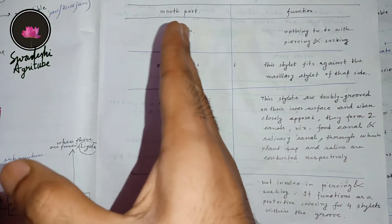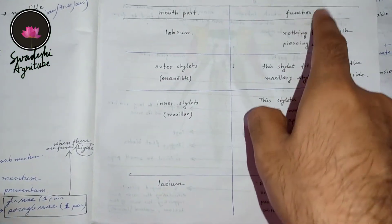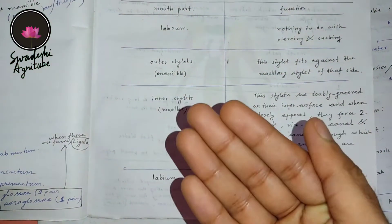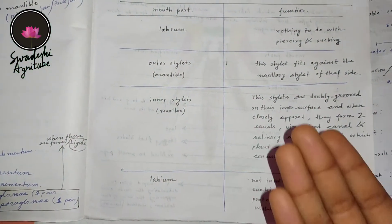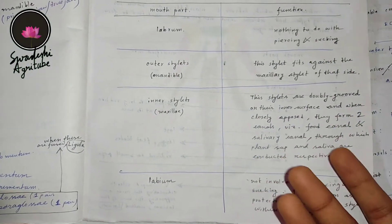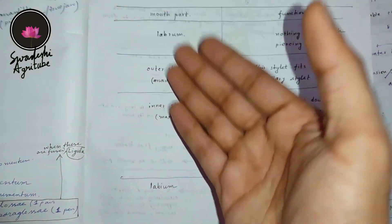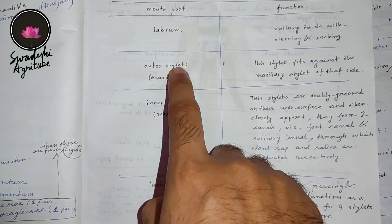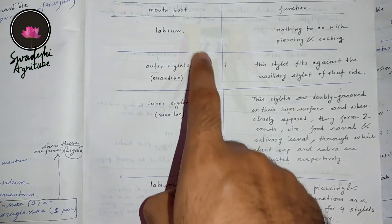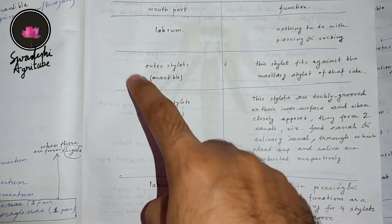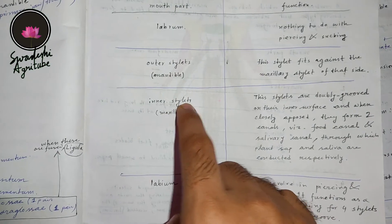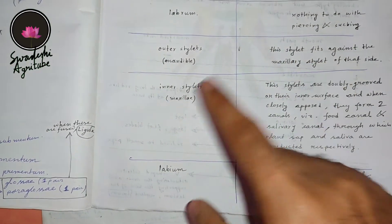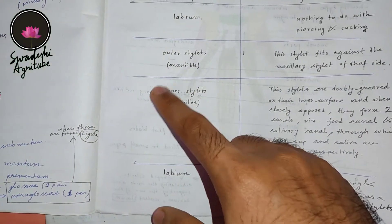I have made another chart — on the left side is the mouthpart and on the right side is its function. This chart will help you understand why the modification was needed and what the function of the modified mouthpart is. Labrum is not modified, so it has nothing to do with piercing and sucking. The outer stylet is modified to protect the inner stylet — that is why it fits against the maxillary stylet.